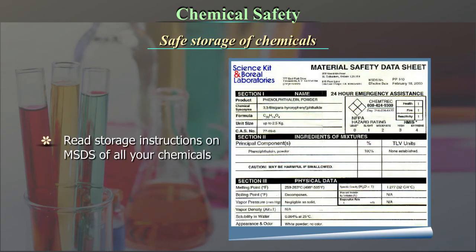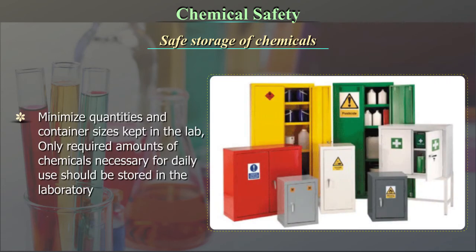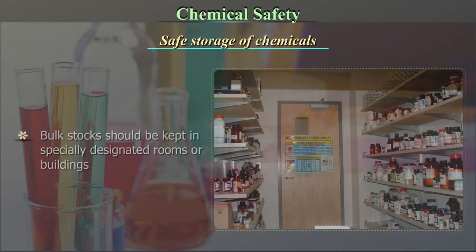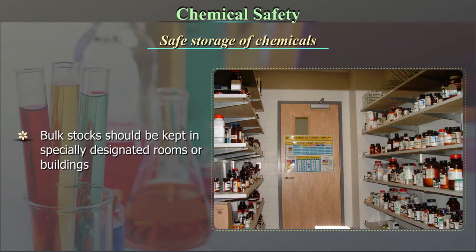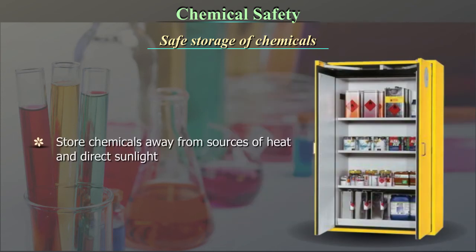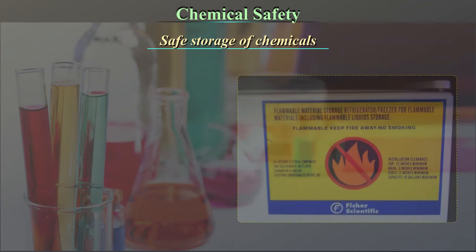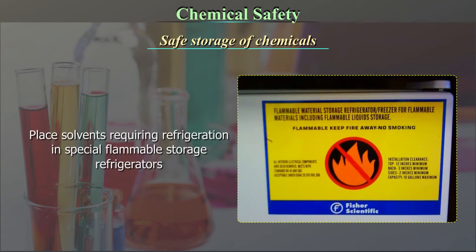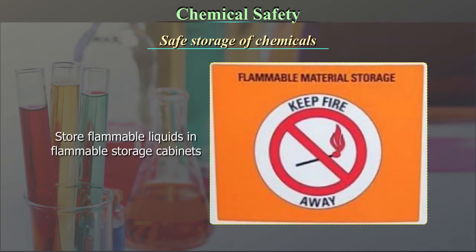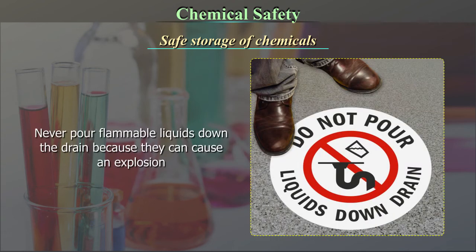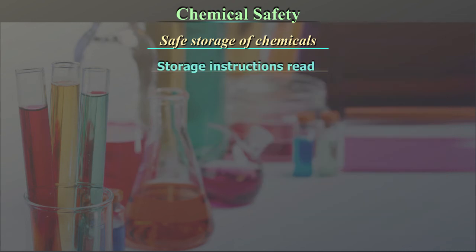Additional labeling requirements: include date of preparation and/or date placed in service, and the date of expiration wherever warranted. Unlabeled containers of chemicals should not be opened. Labels can be purchased or custom made by the laboratory. Safe storage of chemicals: read the storage instructions on the MSDS of all your chemicals. Minimize the quantities and container sizes kept in the lab. Only the required amounts of chemicals necessary for daily use should be stored in the laboratory. Bulk stock should be kept in specially designated rooms or buildings. Store chemicals away from sources of heat and direct sunlight. Do not store hazardous liquids on shelves above eye level. Place solvents requiring refrigeration in special flammable storage refrigerators. Store flammable liquids in flammable storage cabinets. Never pour flammable liquids down the drain because they can cause an explosion.